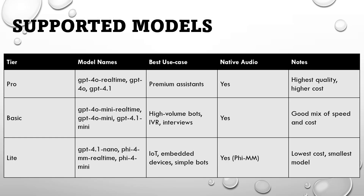On your screen you can see the different supported models for Azure Voice Live API: GPT-4o real-time, GPT-4o, 4.1, mini models, the nano model, and the o5 models. These are divided into three tiers: Pro, Basic, and Lite. Pro is for premium assistants with high quality but more cost. Basic uses the mini models — good for applications handling many calls with price sensitivity. The nano model is for simple bots or IoT devices with lower cost but lower quality.